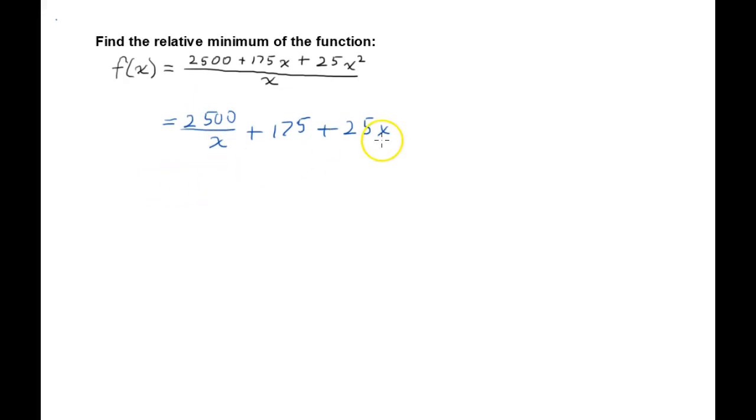So first what I'm going to do is move this all around and put the 25x first. So I'm going to write that as 25x in parentheses, and then plus 2,500 over x, and then add the 175 out here. I haven't changed any values. I've just done that because I know I'm going to be completing a square here. So what I'm going to do is rewrite this as 5 times the square root of x quantity squared.